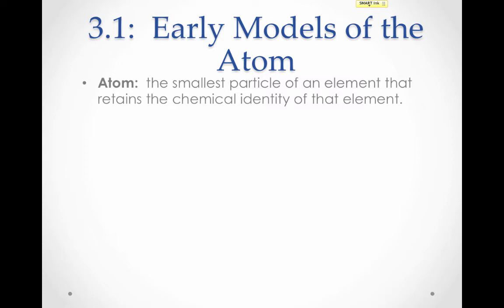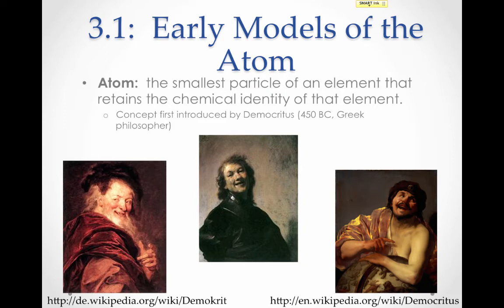Atoms were first developed way back in 450 BC by the Greek philosopher Democritus. Here are some pictures of Democritus. He was often called the laughing philosopher, as you can see from these pictures. It's actually not because he was just a jolly fellow, but because he thought humans were generally kind of stupid and would often laugh at other people. In any case, he was the first person to develop the idea that an atom was a thing.